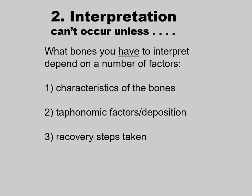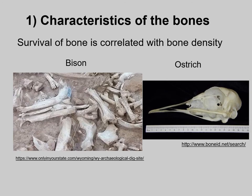The second major task of zooarchaeology is to interpret the bones. What bones you have to interpret depend on a number of factors: the characteristics of the bones, taphonomic factors including deposition, and the recovery steps that you've taken. Survival of bone is correlated with bone density — the more dense the bone, the more likely it is to be preserved. For example, very dense heavy bison bones are much more likely to be preserved than thin skull bones, such as the paper-thin bones in an ostrich skull.